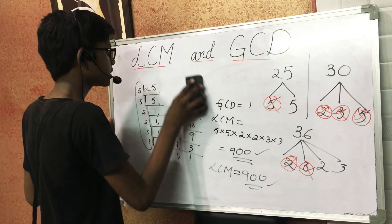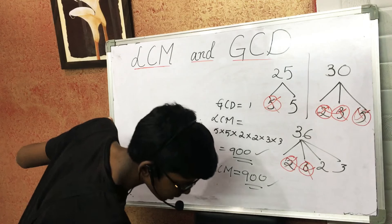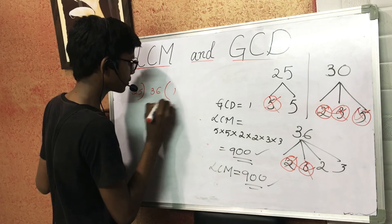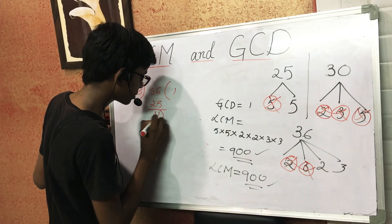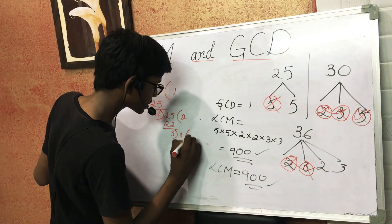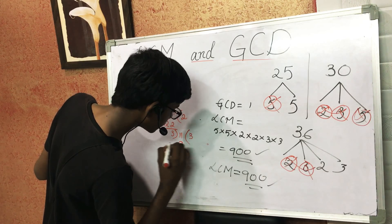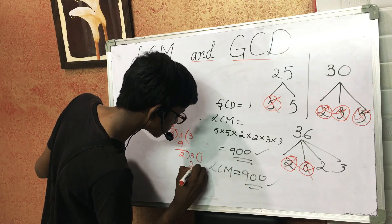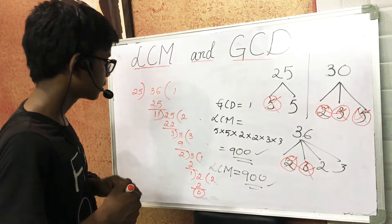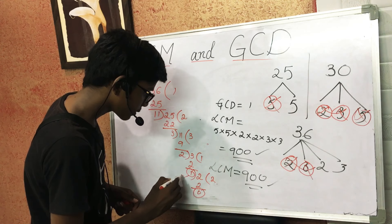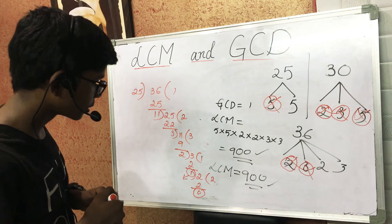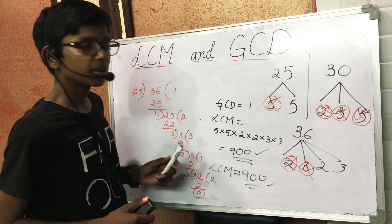Now let us verify GCD using the Euclidean algorithm. Taking the smallest and biggest numbers, we repeatedly apply division: 25 and 36 give remainder 11; 11 goes into 25 giving remainder 3; 3 goes into 11 giving remainder 2; 2 goes into 3 giving remainder 1; 1 goes into 2 giving remainder 0. This process continues until we get zero, confirming GCD is 1, since the previous dividend before zero is 1.